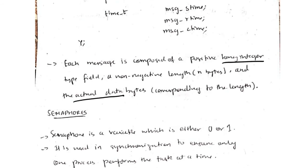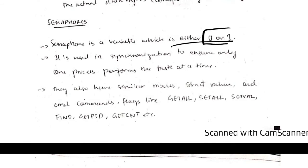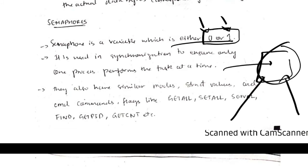Semaphores are variables that have zero or one stored in it. Semaphore is used mainly for synchronization. What happens is if there is a file here and multiple users, and if you want to make sure that at a time only one user should access the file, we can use a semaphore.